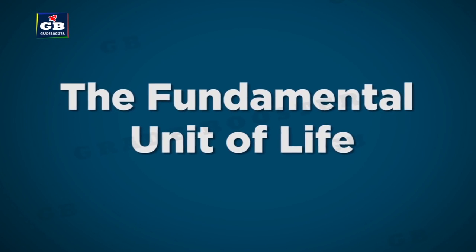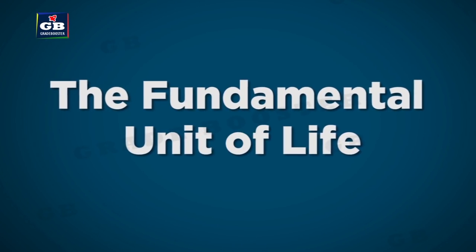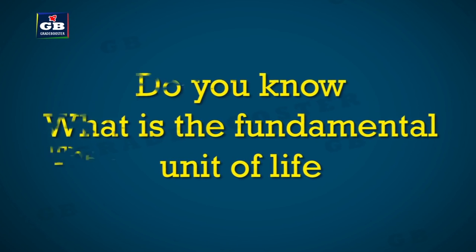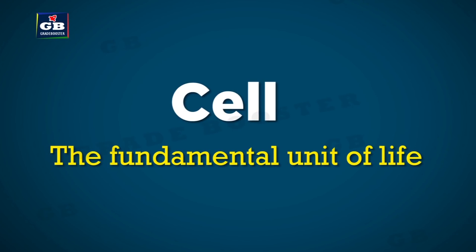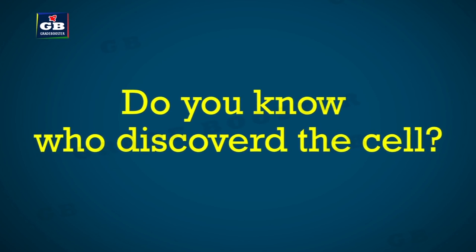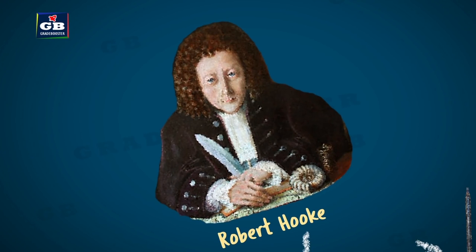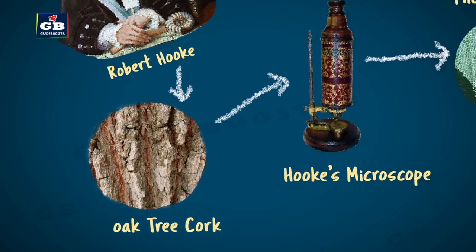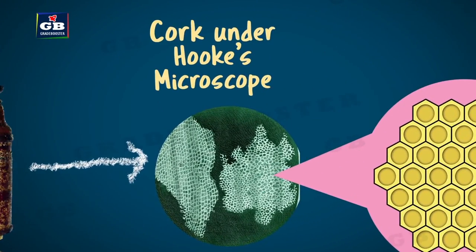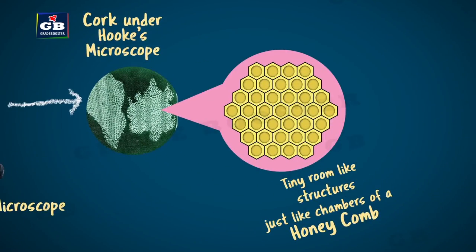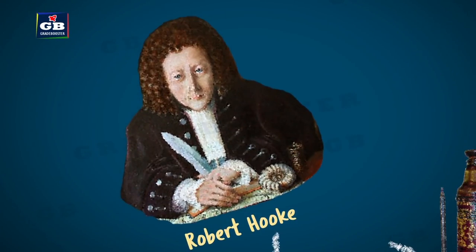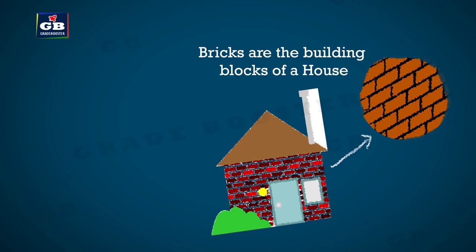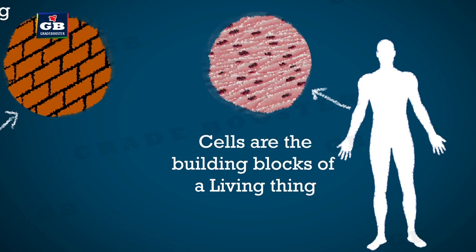In this video we will discuss the fundamental unit of life. Cell is called the fundamental unit of life. It was discovered by Robert Hooke in 1665, who observed a thin slice of cork under his microscope. He found small box-like structures, like small rooms of a honeycomb. Robert Hooke called these boxes as cells — the word 'cell' meaning 'small room.' Cells are the building blocks of living things.